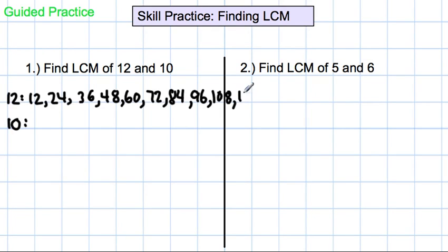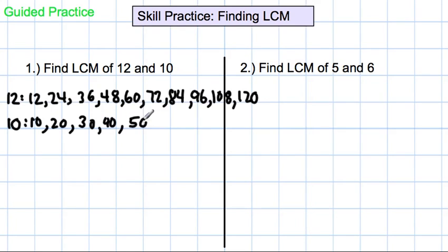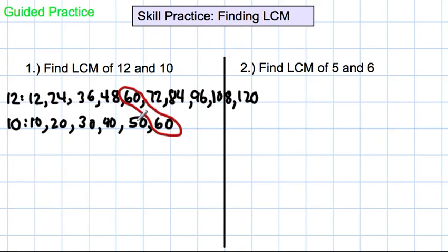And then 120. For 10, we have 10, 20, 30 — any that are there yet? Nope. 40. Nope. 50. And 60. And 60 is on this list and it's on this list. At that point you can stop the second list. You don't have to continue all the way out to 120 because you have identified the least common multiple. So the least common multiple of 12 and 10 equals 60.